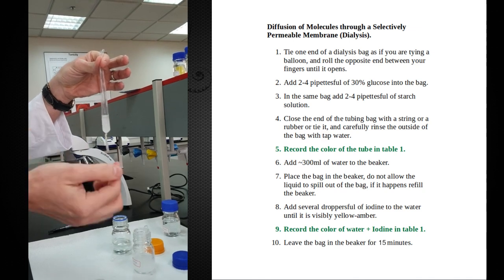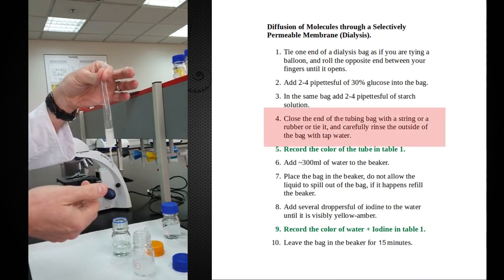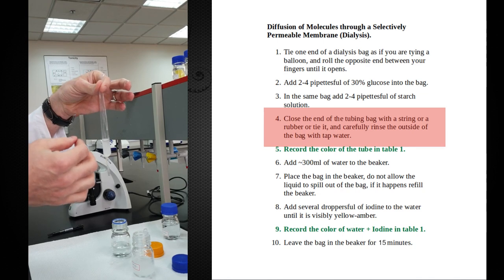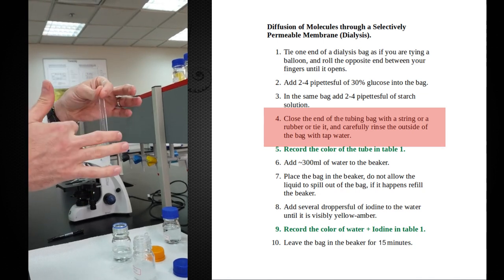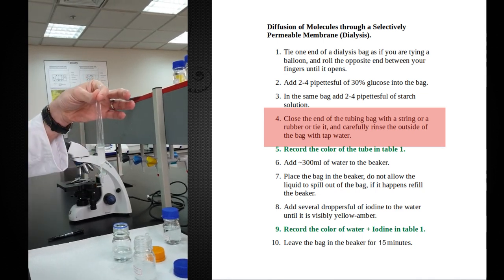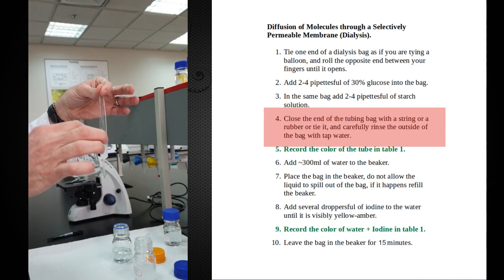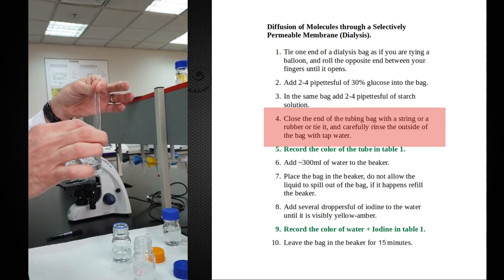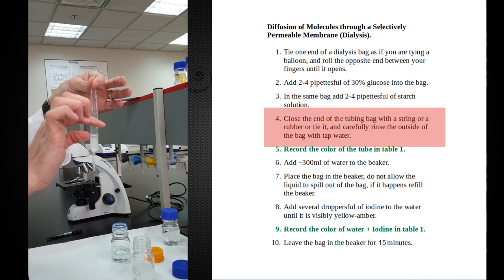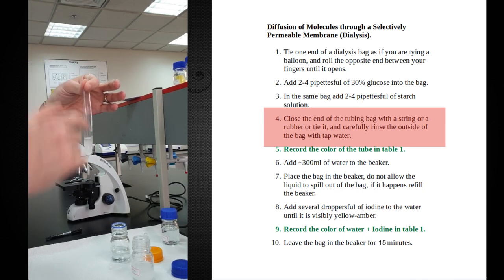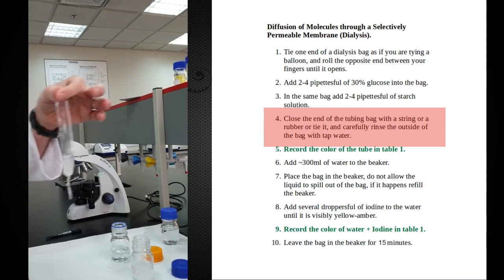I'm not ready to put this into our beaker yet because I might have some residue around the outside. The next thing you want to do is go back to the sink and just rinse off the outside of this thing to make sure that there is no sample on the outside of the bag. If there's any glucose or any starch that goes into this beaker, it's because it went through the dialysis bag and it wasn't just on the outside of the bag. I'm just going to wash this and come right back.